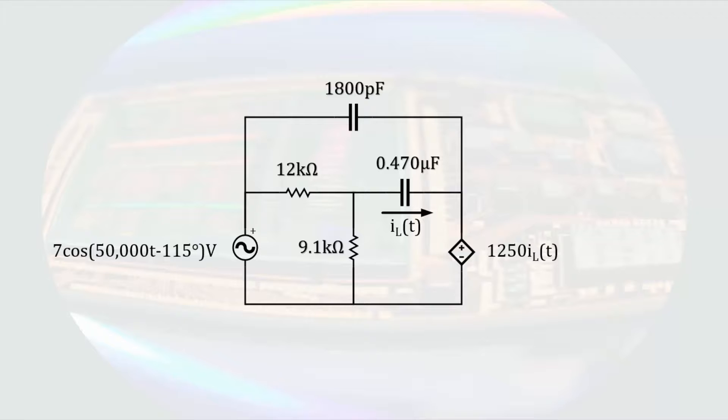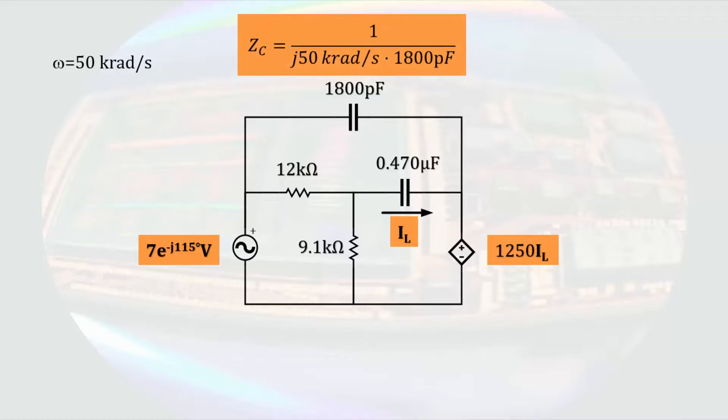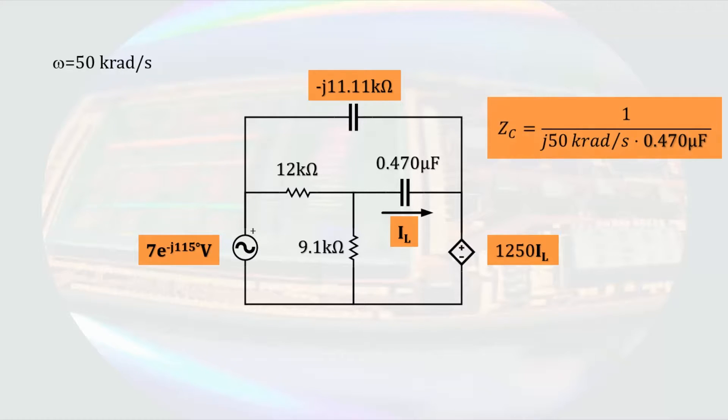We will start by writing IL of T as a phasor current IL. Writing the angular frequency off to the side for future reference, the source voltage can be written as 7E to the minus J 115 degrees volts. Note the presence of a phase angle for the source does not increase the challenge of the conversion. The impedance of a capacitor is 1 over J times angular frequency times the capacitance. So for the 1800 picofarad capacitor, this results in an impedance of minus J 11.11 kiloohms. The 0.47 microfarad capacitor will have an impedance of minus J 42.55 ohms. With that, our circuit is converted to the phasor domain.